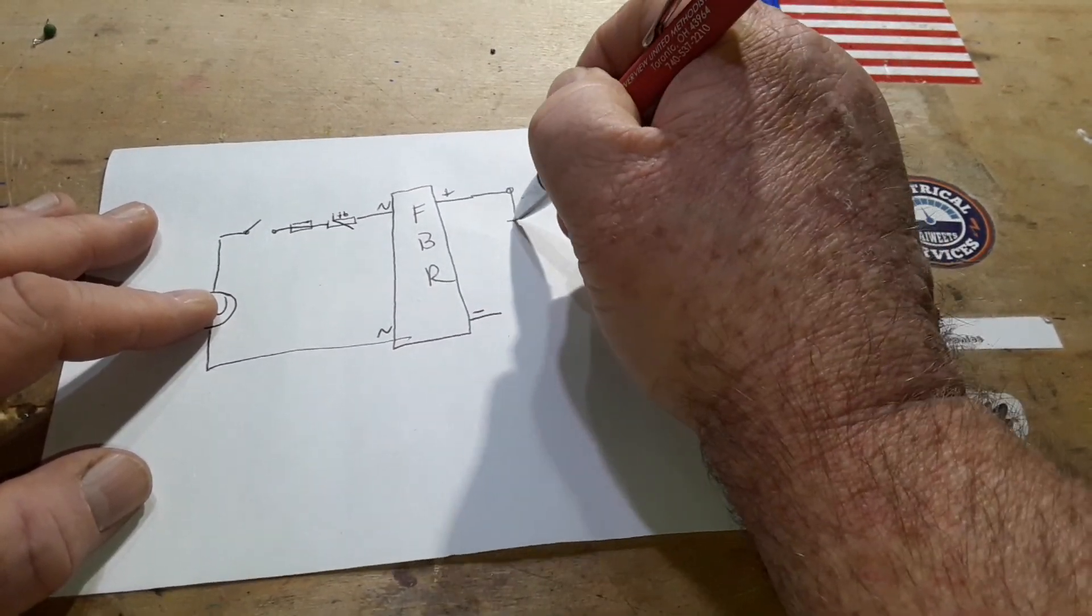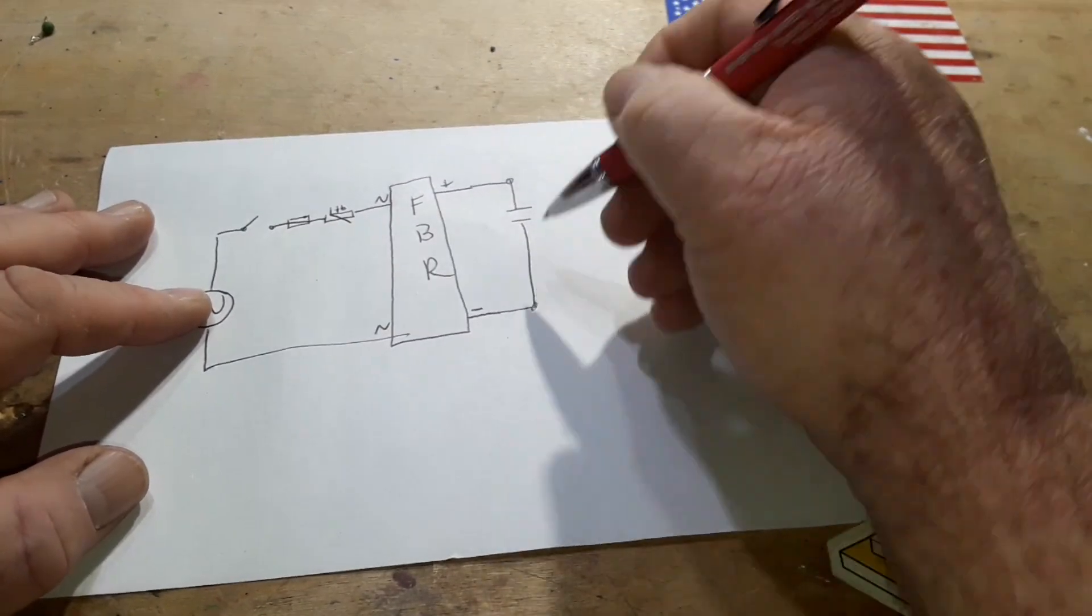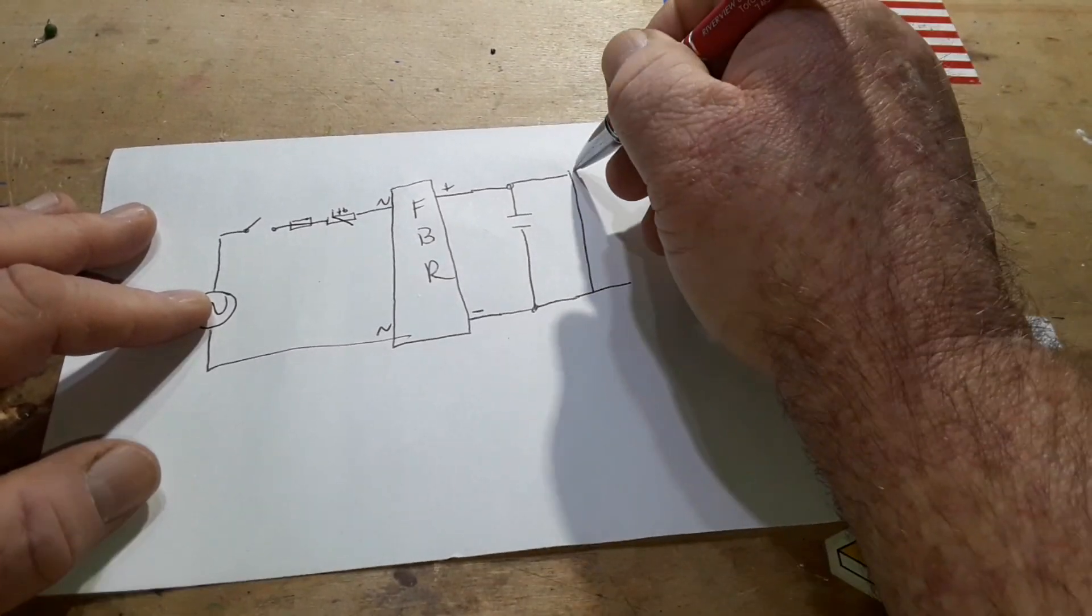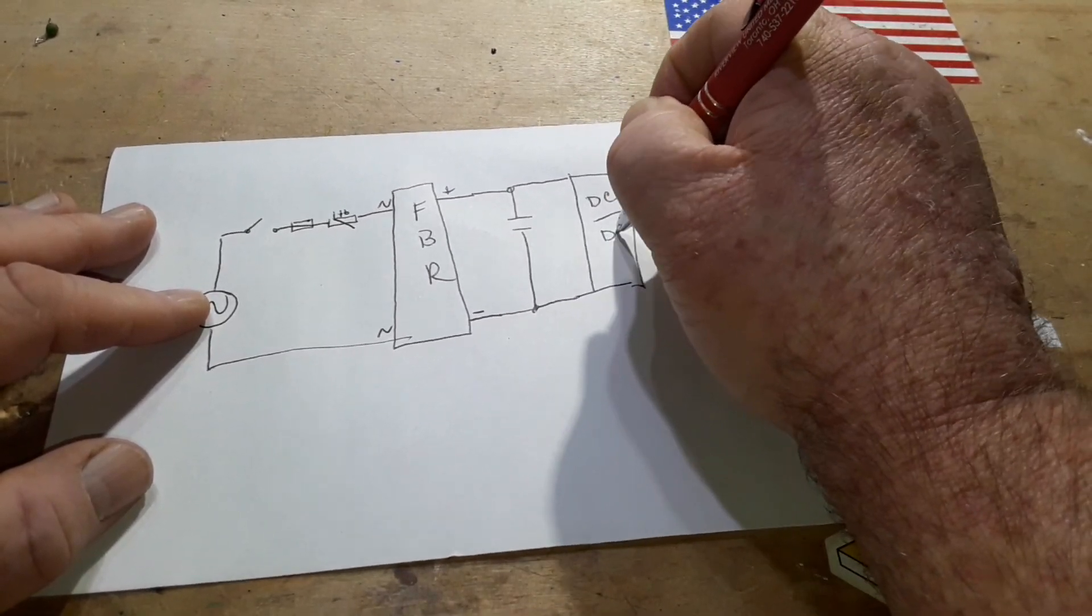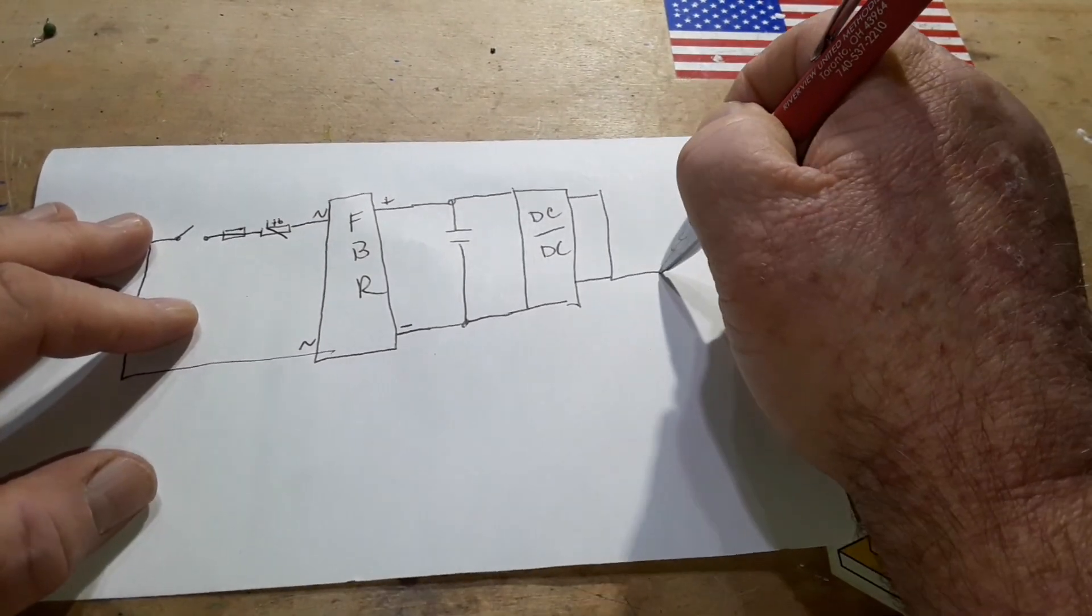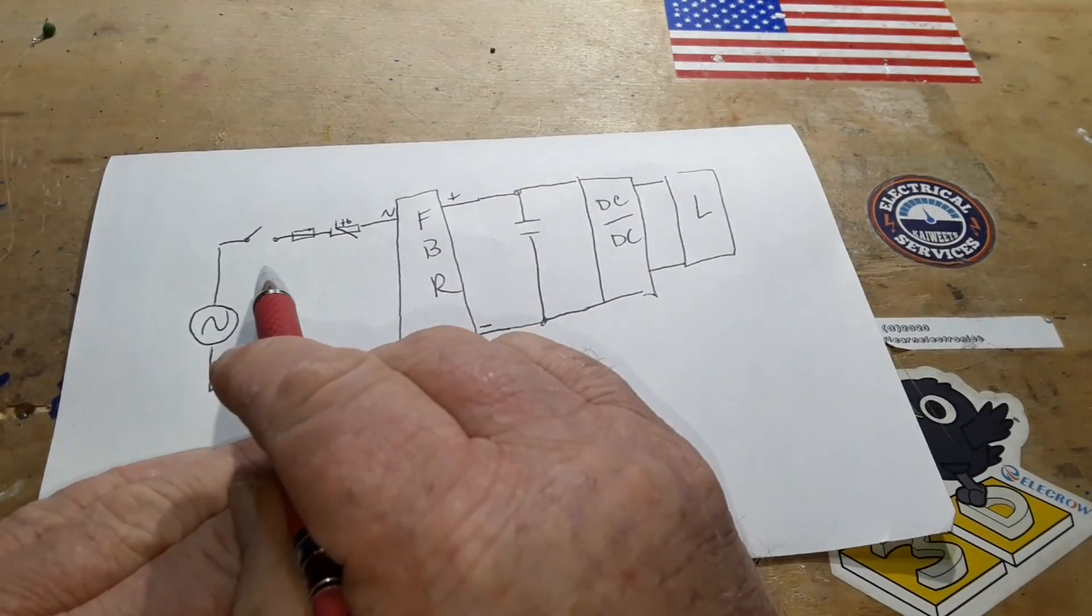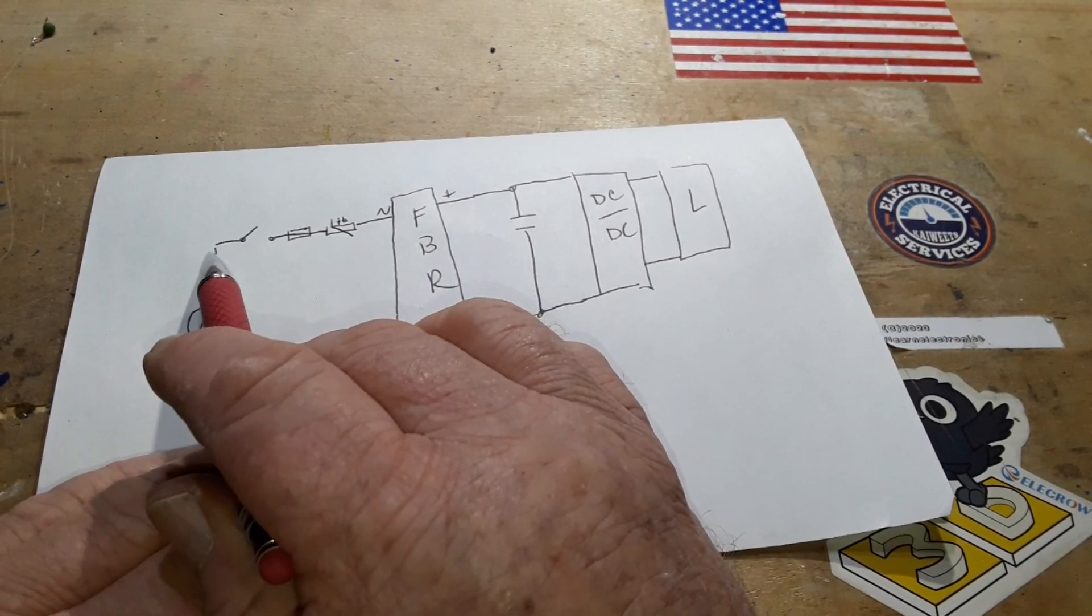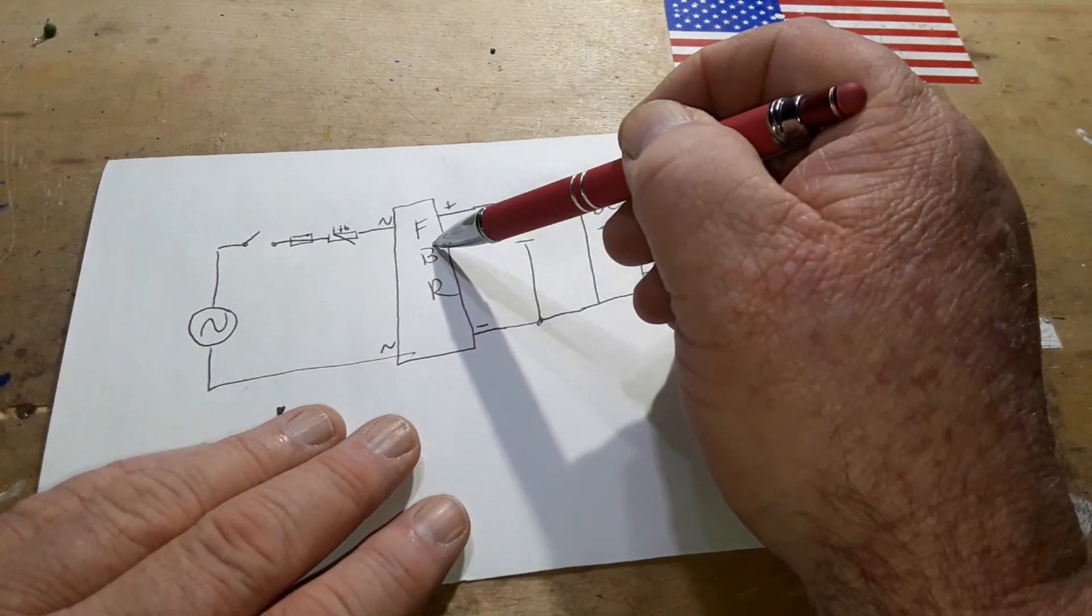And then we have plus and minus DC out of the rectifier. So we'll add a smoothing capacitor. And then, let's say we need a DC to DC converter. And out of the DC to DC converter, finally, we would go to our load. But you notice we have this positive temperature coefficient coming in off the live of our AC through our current fuse before the bridge rectifier.